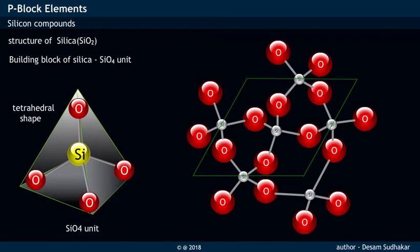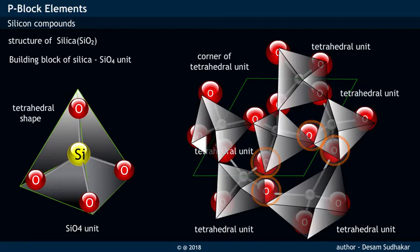The actual structure of silica may be visualized as shown. Here in this structure, each oxygen atom of one SiO4 unit is covalently bonded with adjacent silicon atoms. Each corner of SiO4 unit with tetrahedral shape is in turn attached to adjacent tetrahedral units.